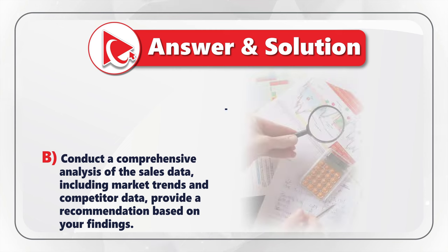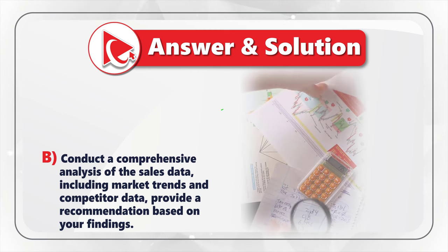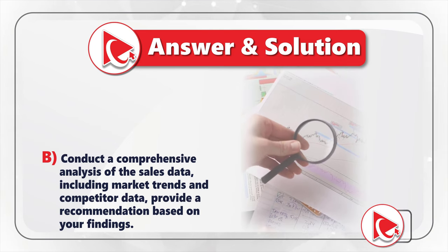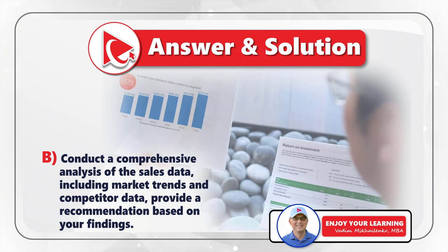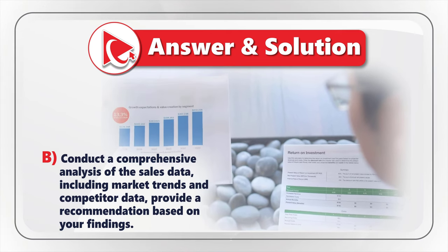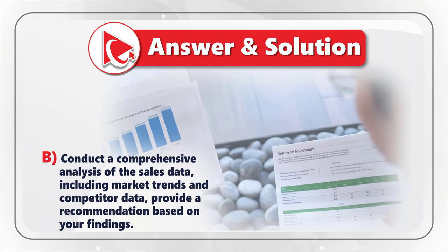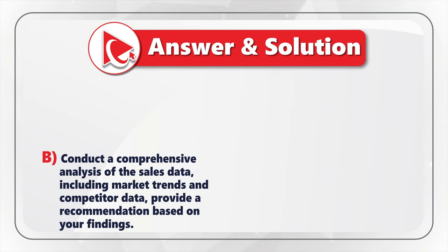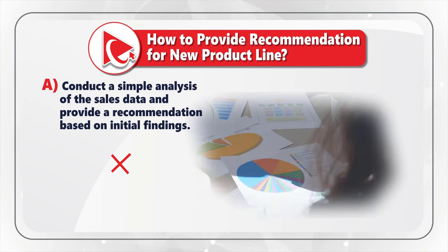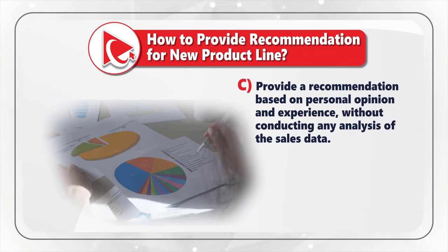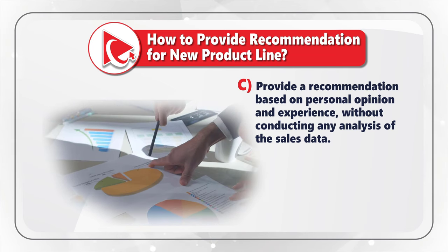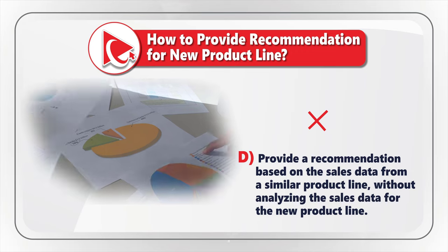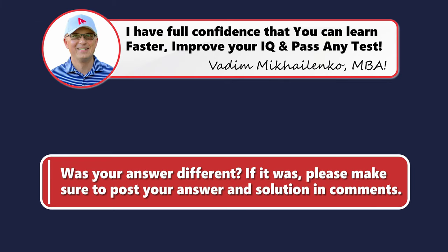I think the correct answer is Choice B — conduct a comprehensive analysis of the sales data, including market trends and competitor data, and provide a recommendation based on your findings. This ensures a thorough understanding of the data and a more accurate, informed recommendation. Option A is too simplistic. Option C is unreliable and unprofessional. Choice D is not recommended since data from a similar product line may not be relevant to the new one.